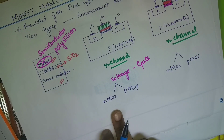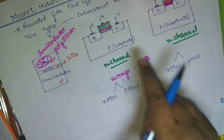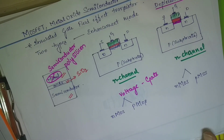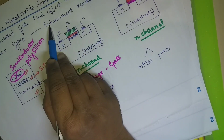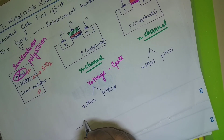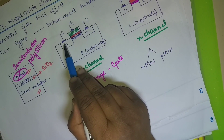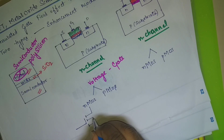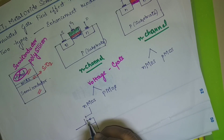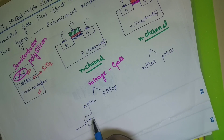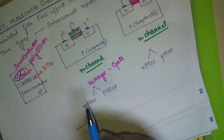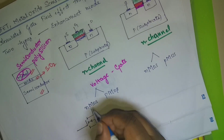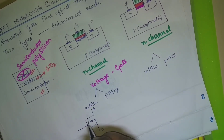Coming to the symbols — how do we represent NMOS and PMOS enhancement and depletion mode transistors in a circuit diagram? For enhancement mode NMOS, you have a gate, and in between you have source and drain. Based on the direction of electron flow we decide the type. When electrons are shown moving towards the gate, it is N-channel or NMOS enhancement mode. It is enhancement mode because there is no connection between source and drain — you have three individual lines.